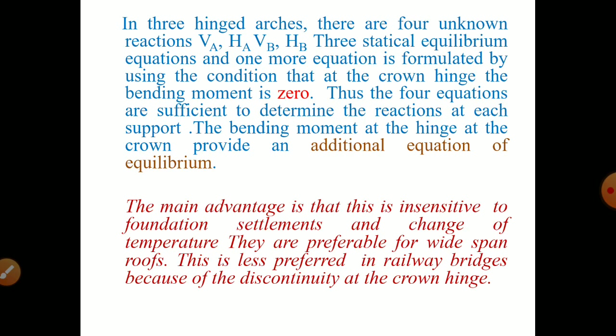In case of three-hinged arches, there are four unknowns: the reaction at A, horizontal and vertical, and reaction at B, horizontal and vertical. Three static equilibrium equations and one more equation is formulated by using the condition that the moment at the crown hinge is zero. Thus, the four equations are sufficient to determine the reactions at each support. The bending moment at the hinge at the crown provides an additional equation of equilibrium.